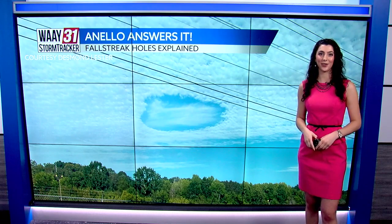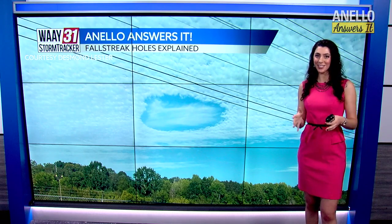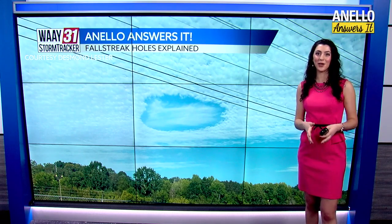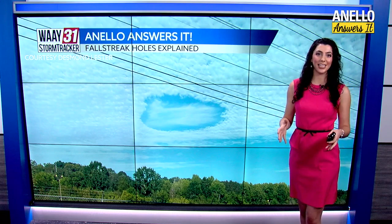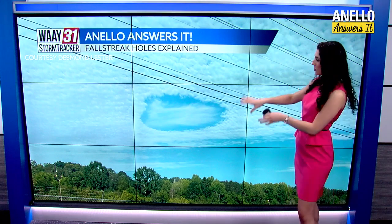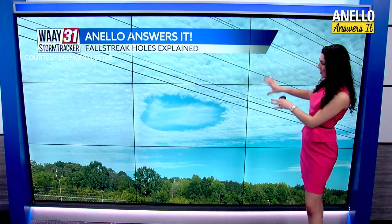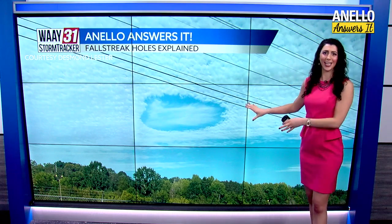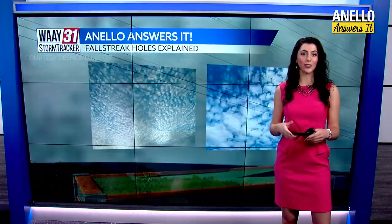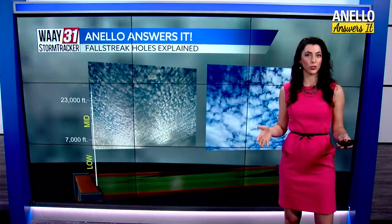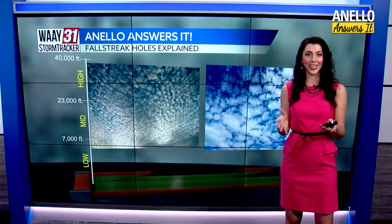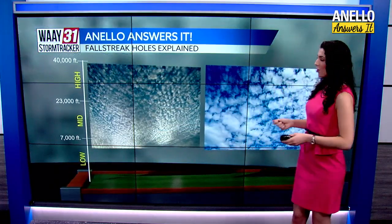It's time for Nello Answers It, and this week is a fun one. We're answering a question from Desmond Lester. He took this picture in Huntsville and asked what exactly this is and what causes it. Well, great question, Desmond. That is called a fall streak hole, and here's how they form.